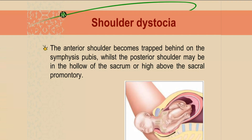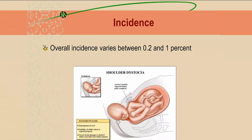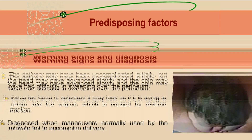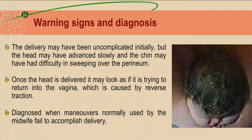The overall incidence of shoulder dystocia varies between 0.2 and 1 percent. The predisposing factors include fetal macrosomia, obesity, diabetes, mid-pelvic instrumental delivery, post-maturity, multiparity, anencephaly, and fetal ascites.